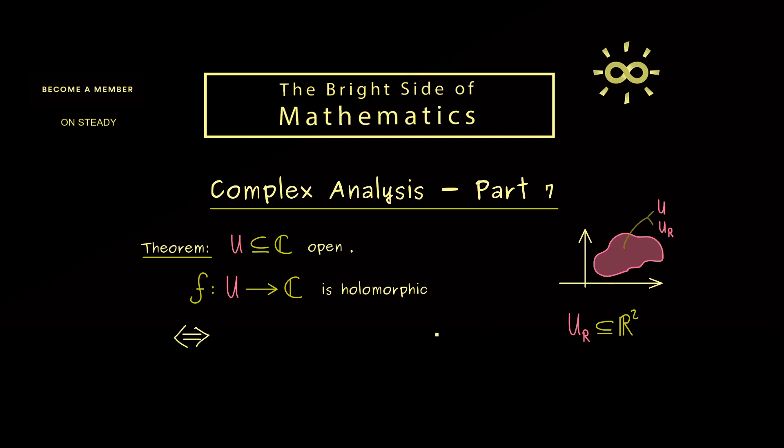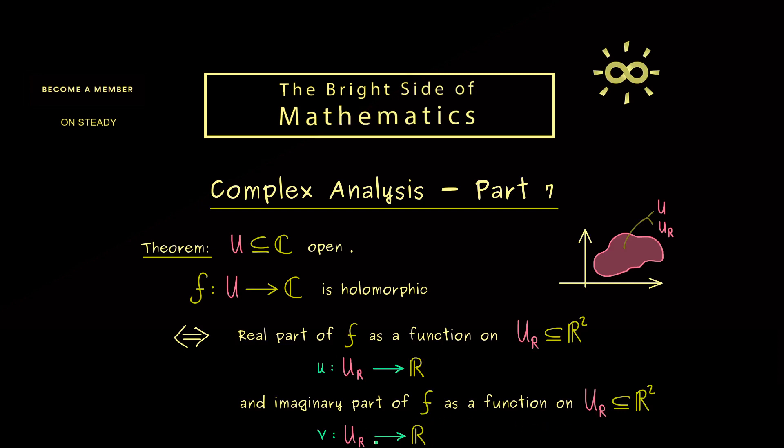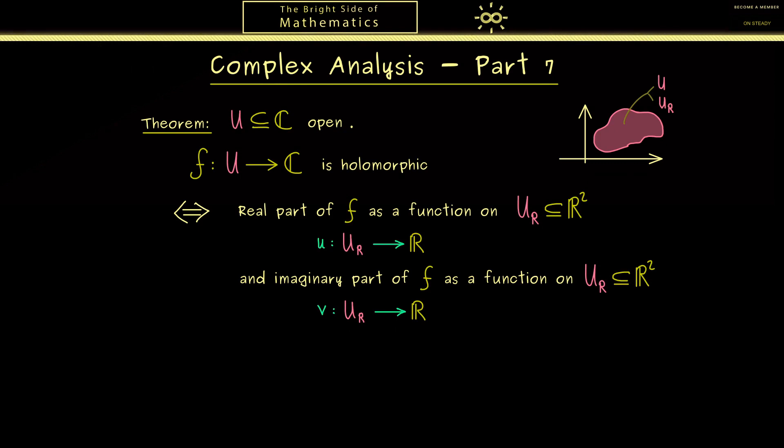Now in the last video we have learned that we can split up the function F into a real and an imaginary part. And both we can see as a function from U_R as a subset of R² into R. In particular the real part function here we denote by a lowercase u. So please recall this u is a real valued function. And then exactly in the same way the imaginary part of F gives us a function we call v. So also here we have a function with domain U_R and codomain R. Hence you see the whole information of the function F is now translated into these two functions.